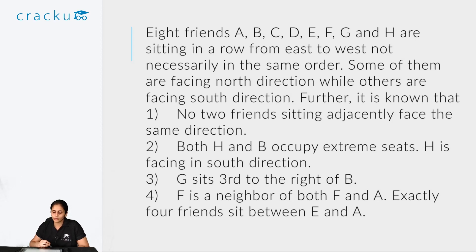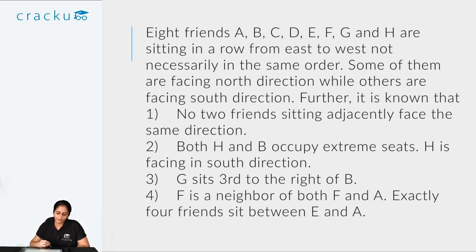Second, both H and B occupy extreme seats, and H is facing the south direction. Third, G sits third to the right of B. Fourth, F is a neighbor of both D and A. And exactly 4 friends sit between E and A.